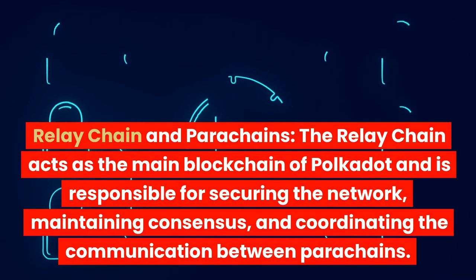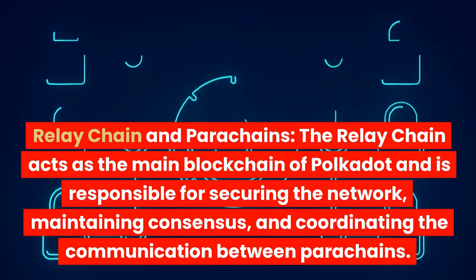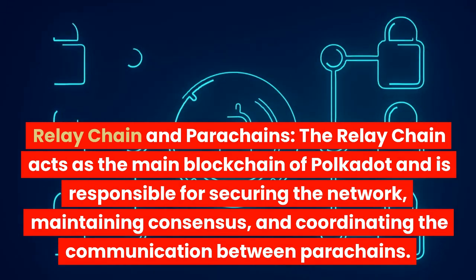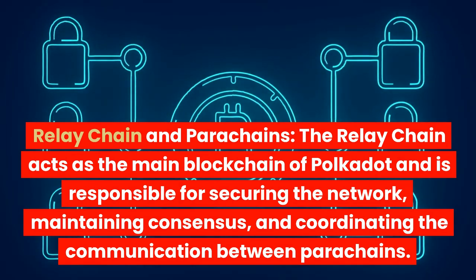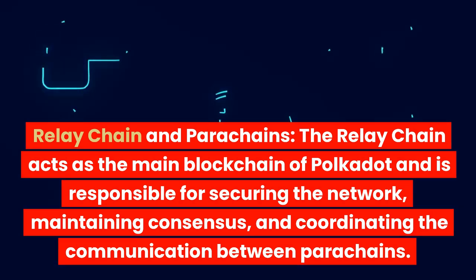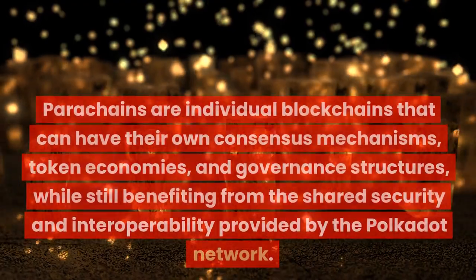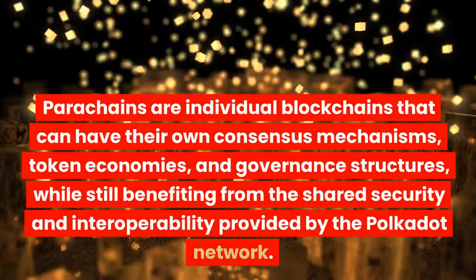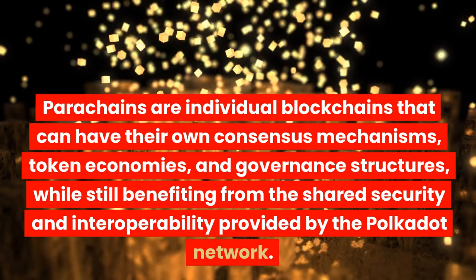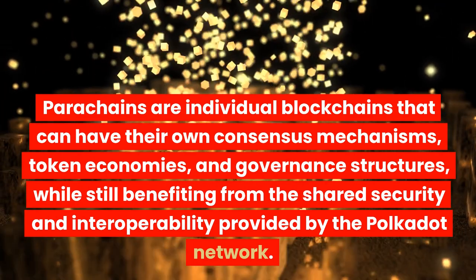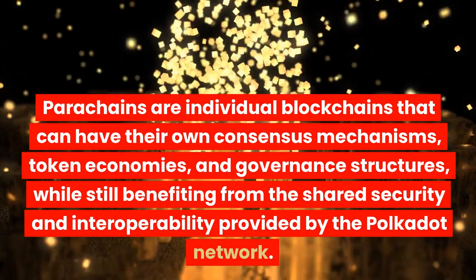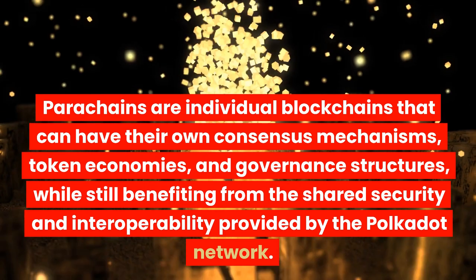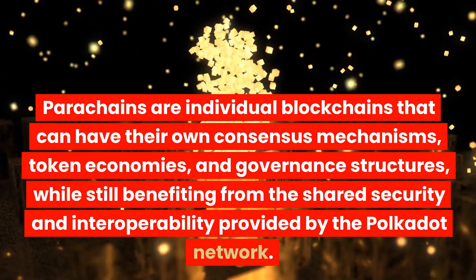Relay Chain and Parachains. The relay chain acts as the main blockchain of Polkadot and is responsible for securing the network, maintaining consensus, and coordinating the communication between parachains. Parachains are individual blockchains that can have their own consensus mechanisms, token economies, and governance structures, while still benefiting from the shared security and interoperability provided by the Polkadot network.